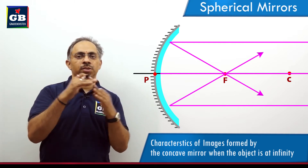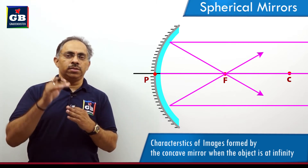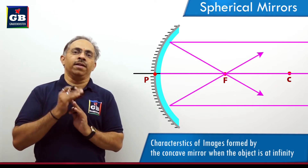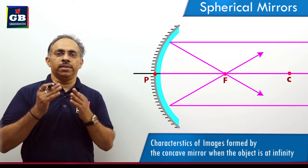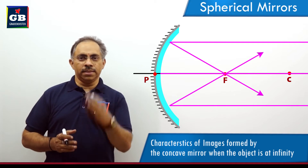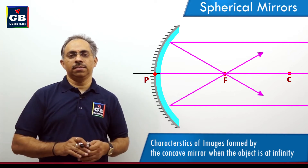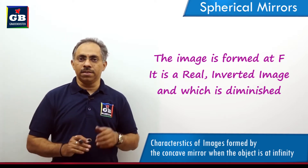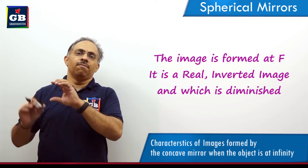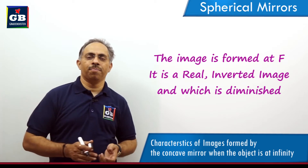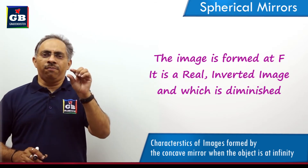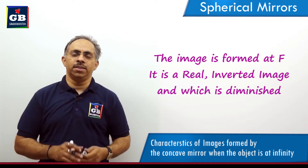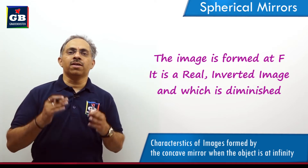Because there are different rays which are convergent at the focus, the point where these rays converge is the point where the image is formed. When the object is at infinity, the image is formed at the principal focus. Because this is a concave mirror, the image formed is inverted with respect to the object — upside down. The image is also very highly diminished in size, and it is a real image, meaning it can be caught on a screen.